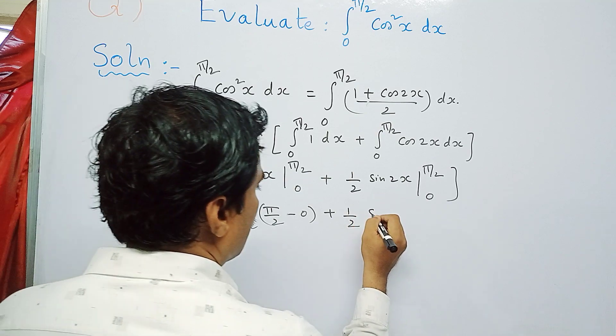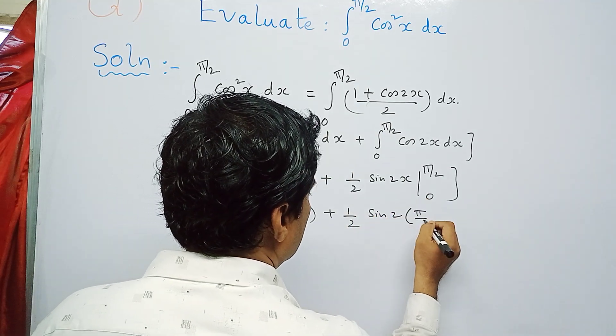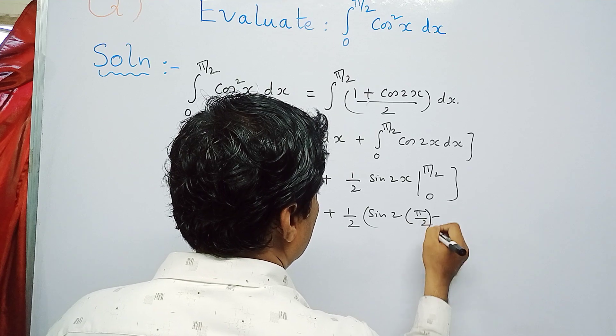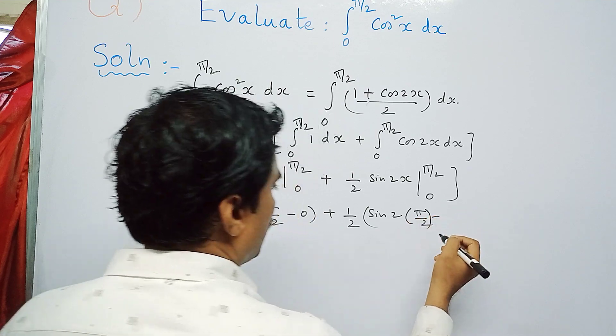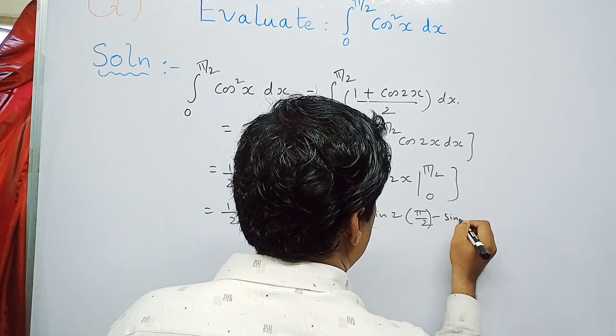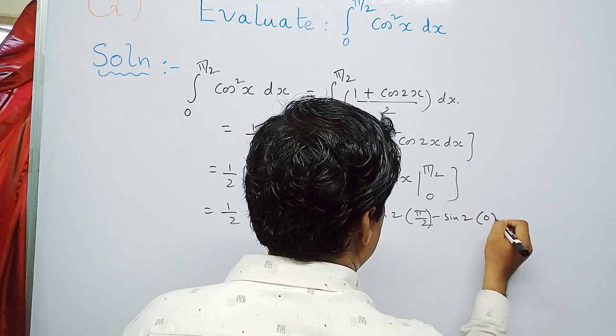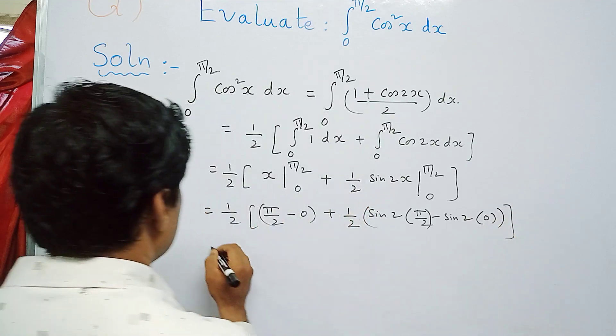In place of x, put upper limit so π/2 minus again sine 2 times, in place of x put 0 here, so close the bracket.